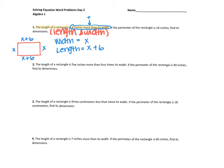Now remember, to find the perimeter of a rectangle, we just add up all the sides. Another way to think about it is two times your width — the width was just X, so that would be two times X, because I have two of those — plus two times my length, because I have two of those, so that would be X plus six.